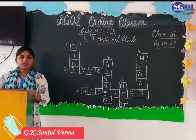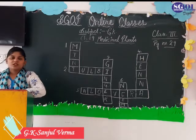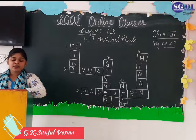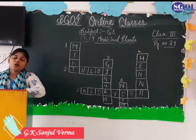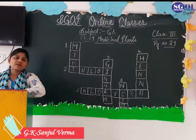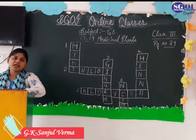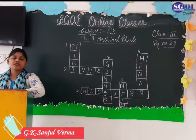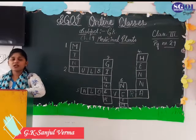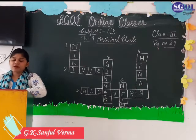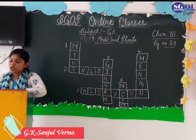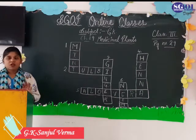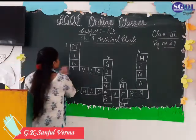Now move to page number 31. Page number 31 is chapter 20 and unit 4. Unit 4 is animals and birds. Chapter 20 is animal products. In this exercise, you have to match the following pictures with the other block. You have to complete this exercise first.